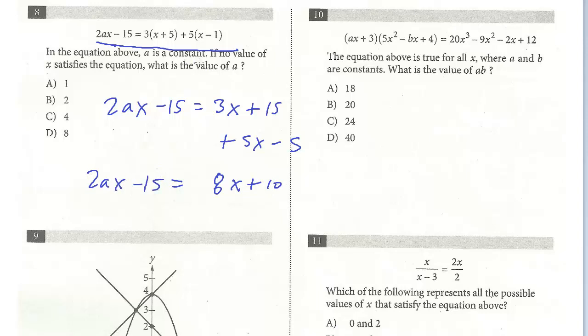And then I just combine. So on the right side, it's going to be 8x plus 10, and 2ax minus 15 on the left. The question is asking, no value of x satisfies. You should be able to realize that if both of these are the same, if we have 8x on both sides, is there any way to make 8x minus 15 equal to 8x plus 10? No. That's really what this question is looking for. To make both of these terms the same so that no value satisfies x, a would just be 4. Then we have 8x on both sides. So the answer for number 8 is C.